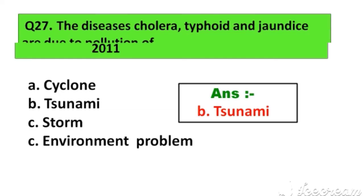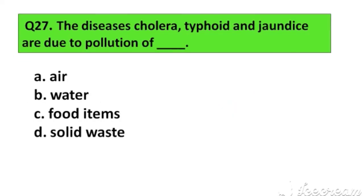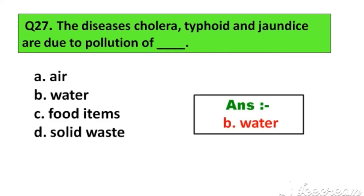Question number 27. The diseases cholera, typhoid, and jaundice are due to pollution of: Option A. Air, B. Water, C. Food items, D. Solid waste. The right answer is Option B. Water.